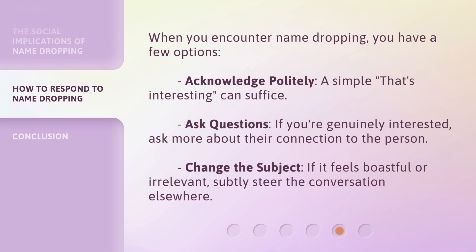When you encounter name-dropping, you have a few options. Acknowledge politely — a simple 'that's interesting' can suffice. Ask questions — if you're genuinely interested, ask more about their connection to the person. Change the subject — if it feels boastful or irrelevant, subtly steer the conversation elsewhere.